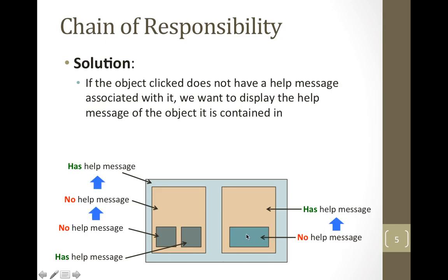Let's say the user tries to get the help message for a specific object. It doesn't have a help message, so instead of displaying nothing, it moves out one object to the one that completely encapsulates it. That outer object does have a help message, so that's what would be displayed. Same goes for over here — if we click an object with no help message, we move out one, and if that still doesn't have one, we keep going until we reach the outside green box, which does have a help message.